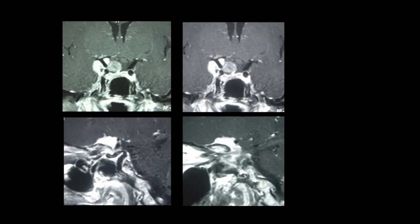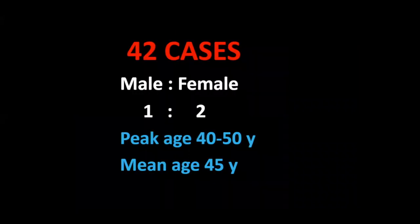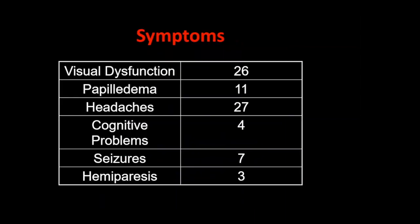Let me speak about my series. I was lucky to get about 60 cases. I lost follow-up on 18 of them, so I'm reporting the 42 cases with good follow-up of minimum two years, between the years 1990 to 2018. Demographics: females more than males, peak age 40 to 50, mean age 45. Symptoms on presentation included visual dysfunction, papilledema, headaches, cognitive problems, seizures, and hemiparesis.